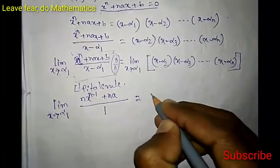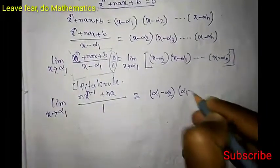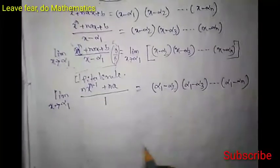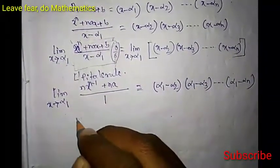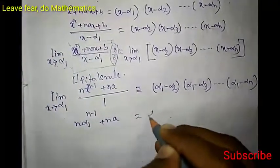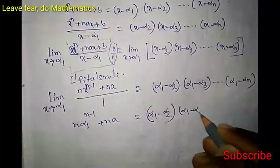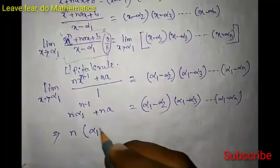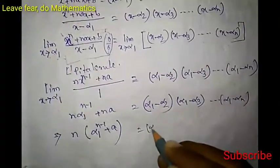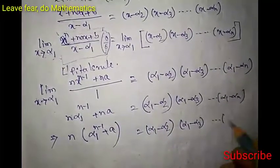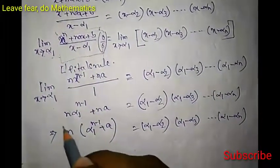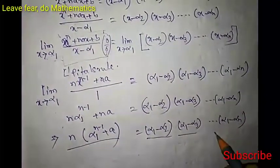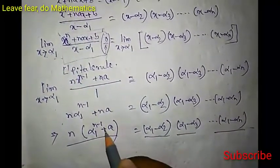Now substituting x = α₁ on both sides: nα₁ⁿ⁻¹ + na = (α₁ − α₂)(α₁ − α₃)···(α₁ − αₙ). Factoring n from the left side gives n(α₁ⁿ⁻¹ + a) = (α₁ − α₂)(α₁ − α₃)···(α₁ − αₙ). Thus we have proved that (α₁ − α₂)(α₁ − α₃)···(α₁ − αₙ) = n(α₁ⁿ⁻¹ + a). Proved.